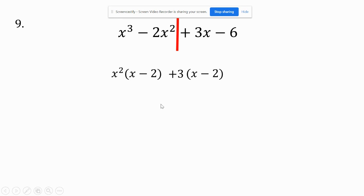And then what I do is this. I treat this like a big distributed property. x minus 2 is common to both. So I can take the x minus 2 out. And what's left? x squared plus 3.